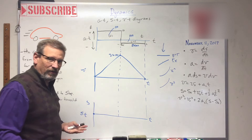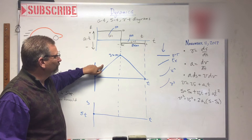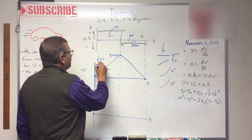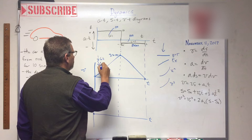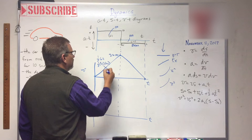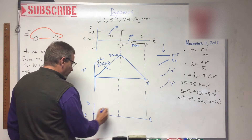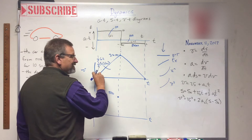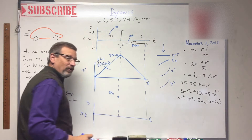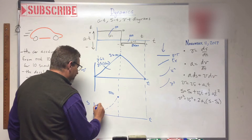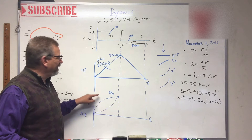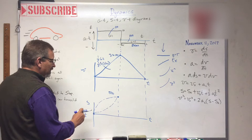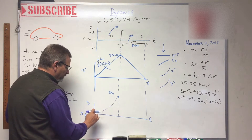Now for the position diagram at the bottom. The car starts at position zero. For the first section, I use the graphic method — find the area of the velocity triangle, which is one half base times height: one half times 10 times 100 equals 500 meters. So position goes to 500 meters at t = 10 seconds. Since the velocity curve is a linear slope, the next line down — position — is going to be parabolic. And there are two types of parabola: fast-then-slow or slow-then-fast.